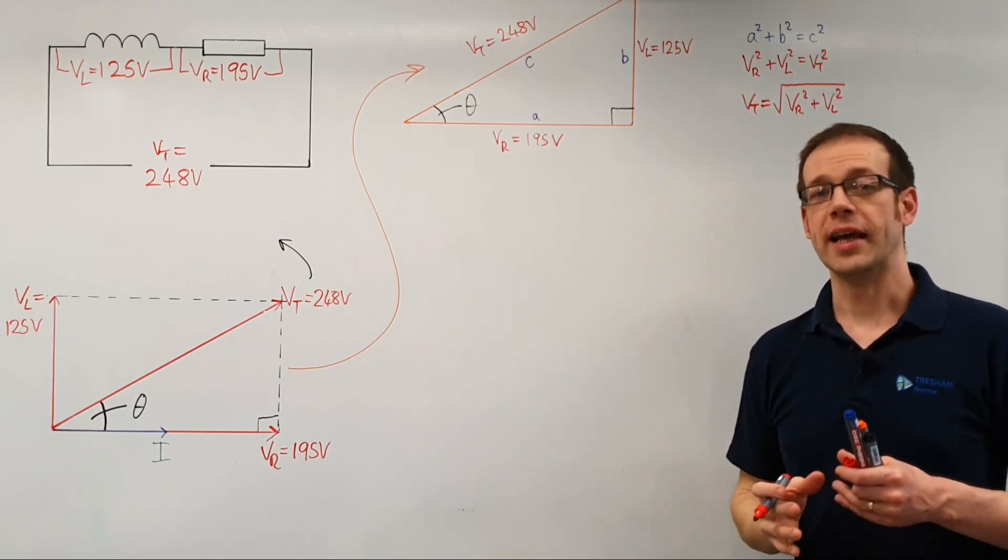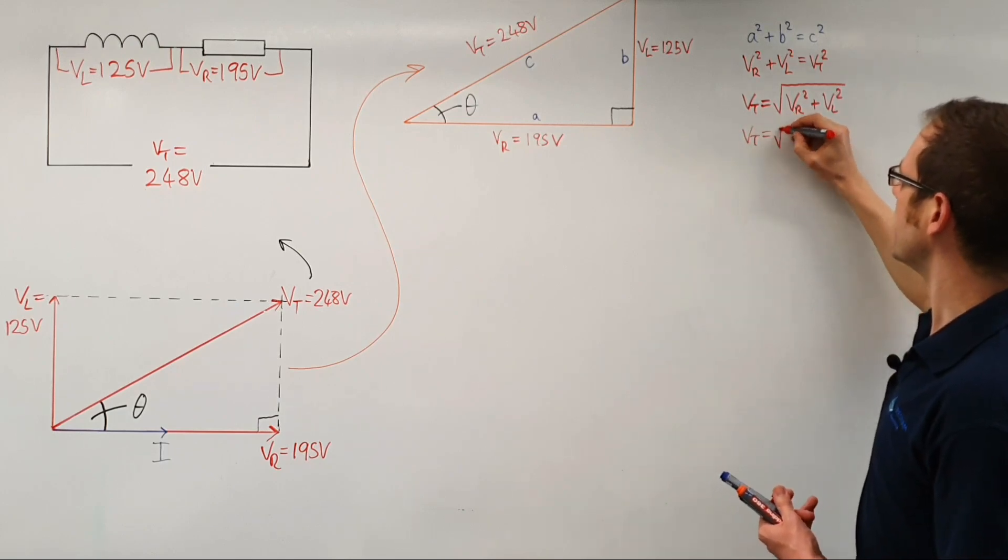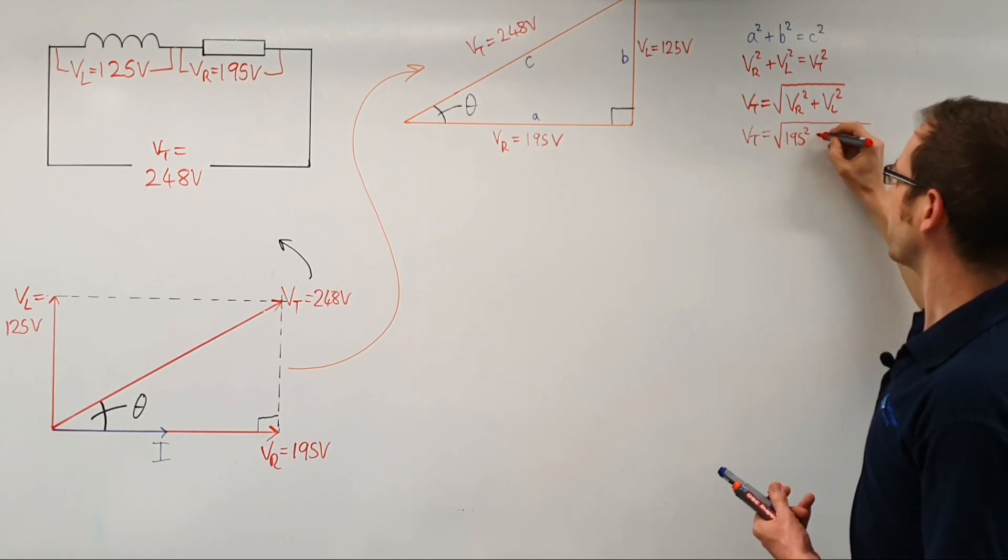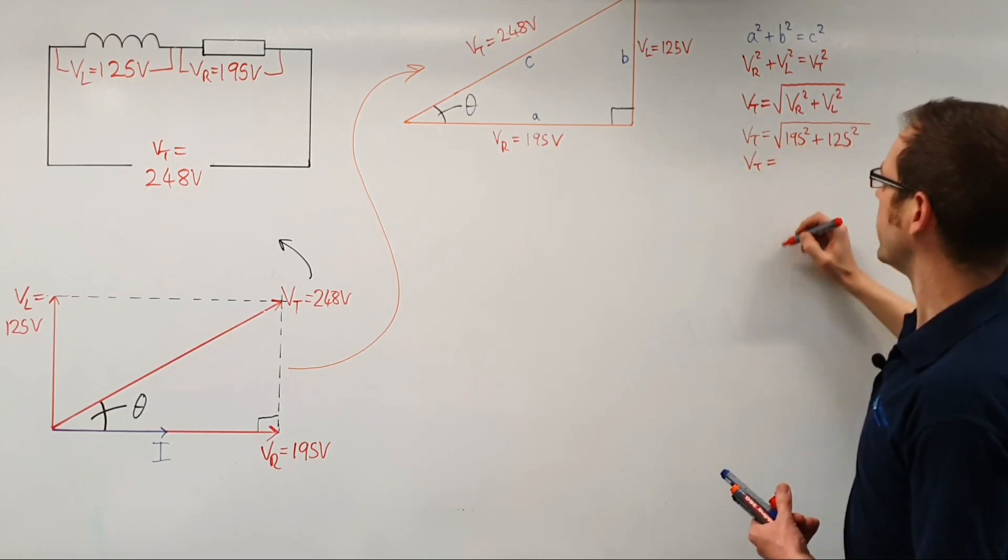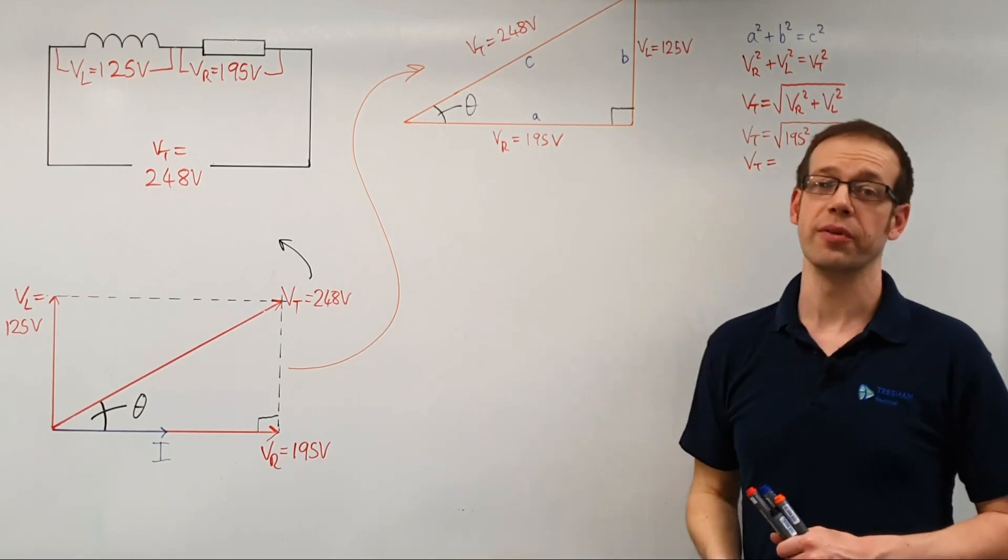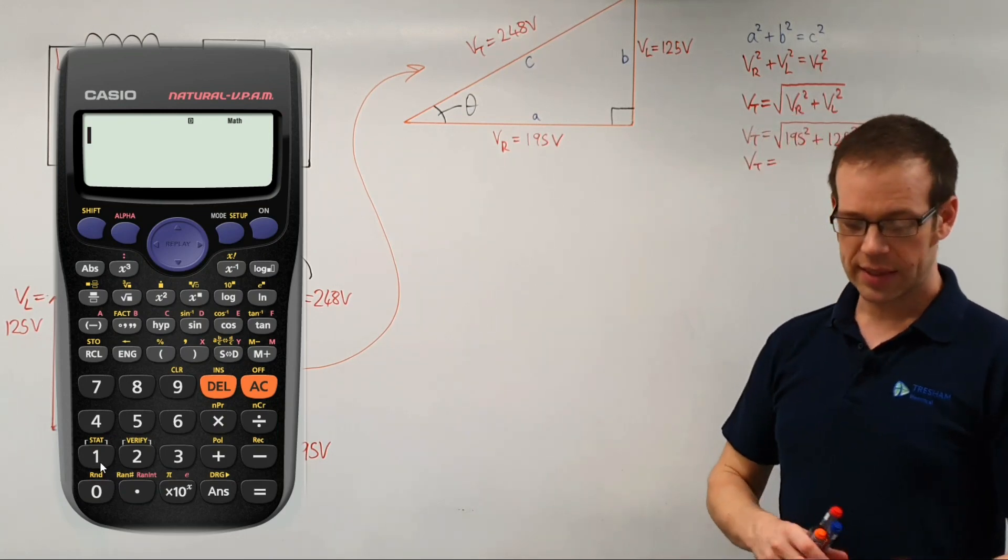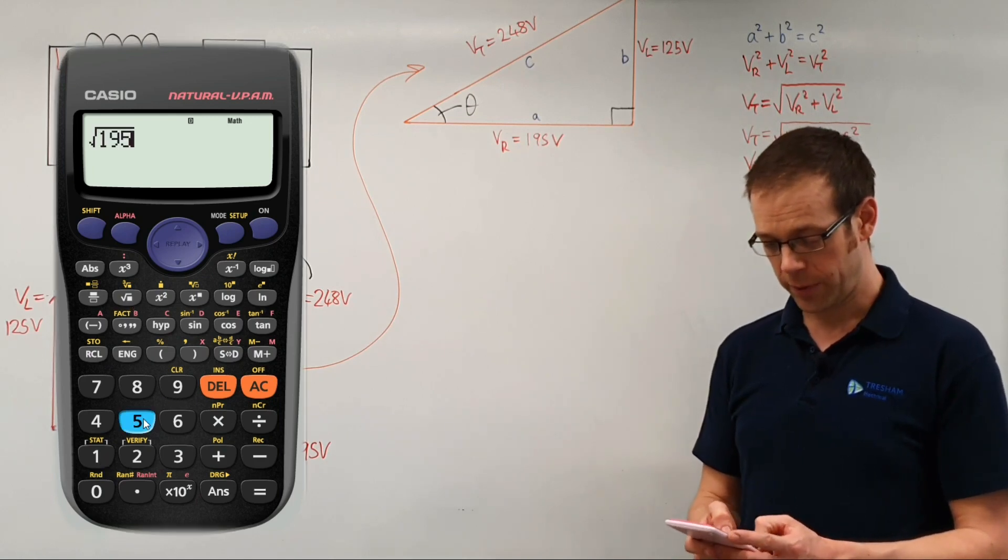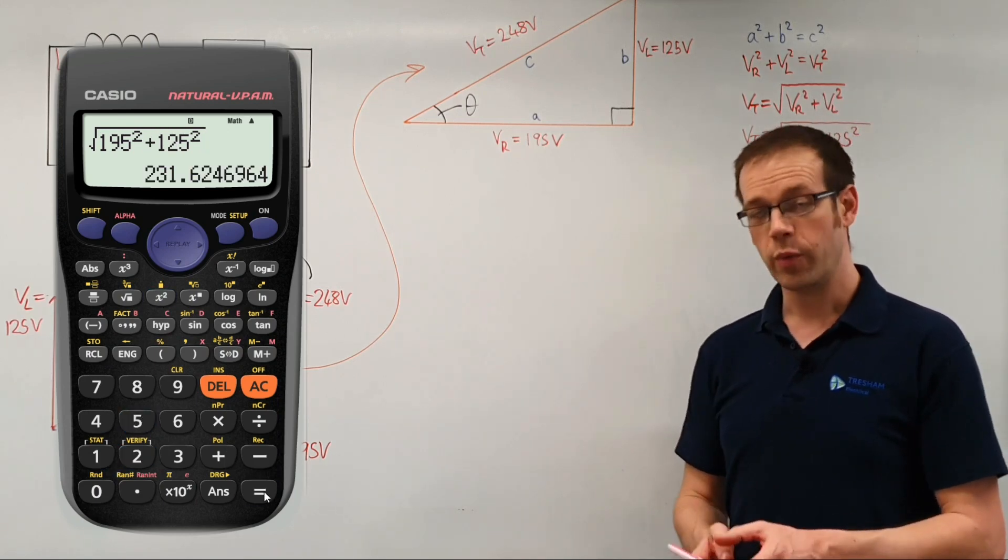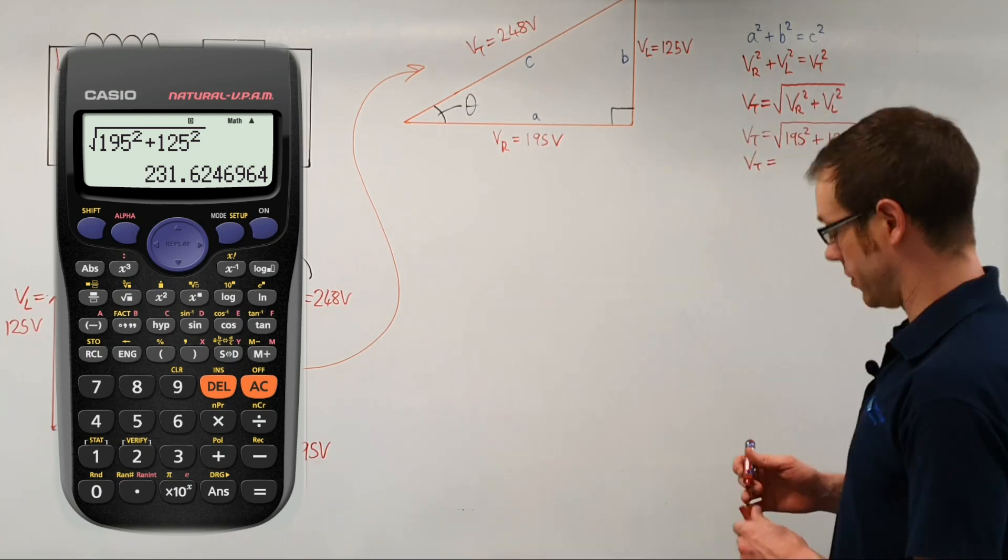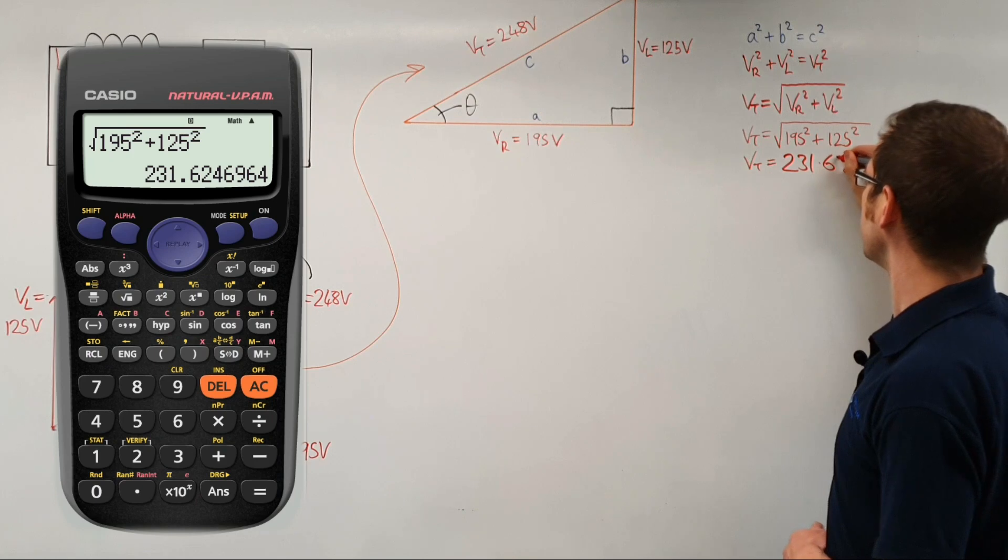We've got our formula there now that relates the different sides of the triangle to each other, so we can put the numbers in. VT is equal to the square root of 195 squared plus 125 squared. We'll put that into our calculators and figure out what that's going to come up as. If we do the square root of 195 squared plus 125 squared, the answer comes out at 231.62 volts.